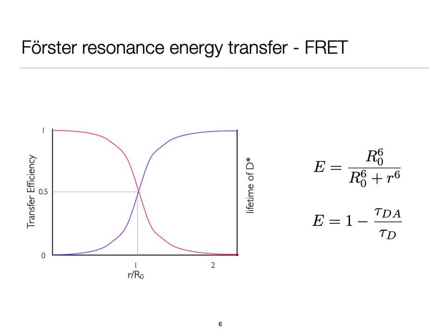If I was to actually look at the lifetime of the donor, as the efficiency is 1, the lifetime is 0, and that lifetime will increase to its unquenched lifetime as we pass a little over two Förster radiuses.